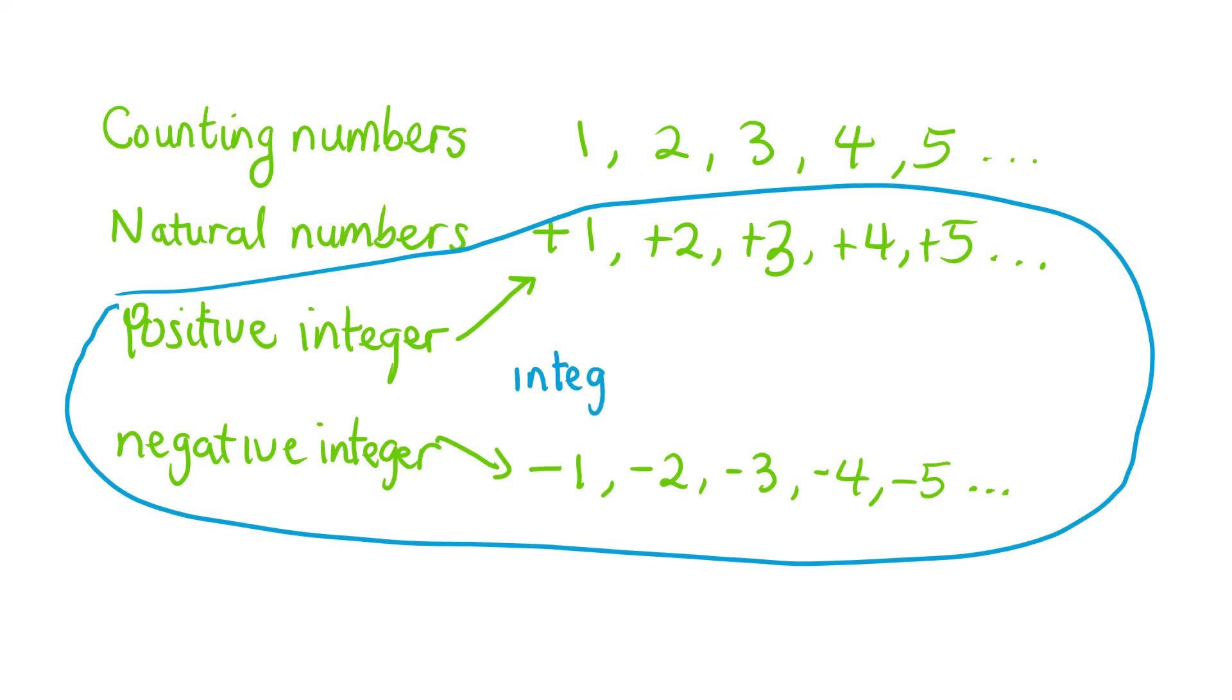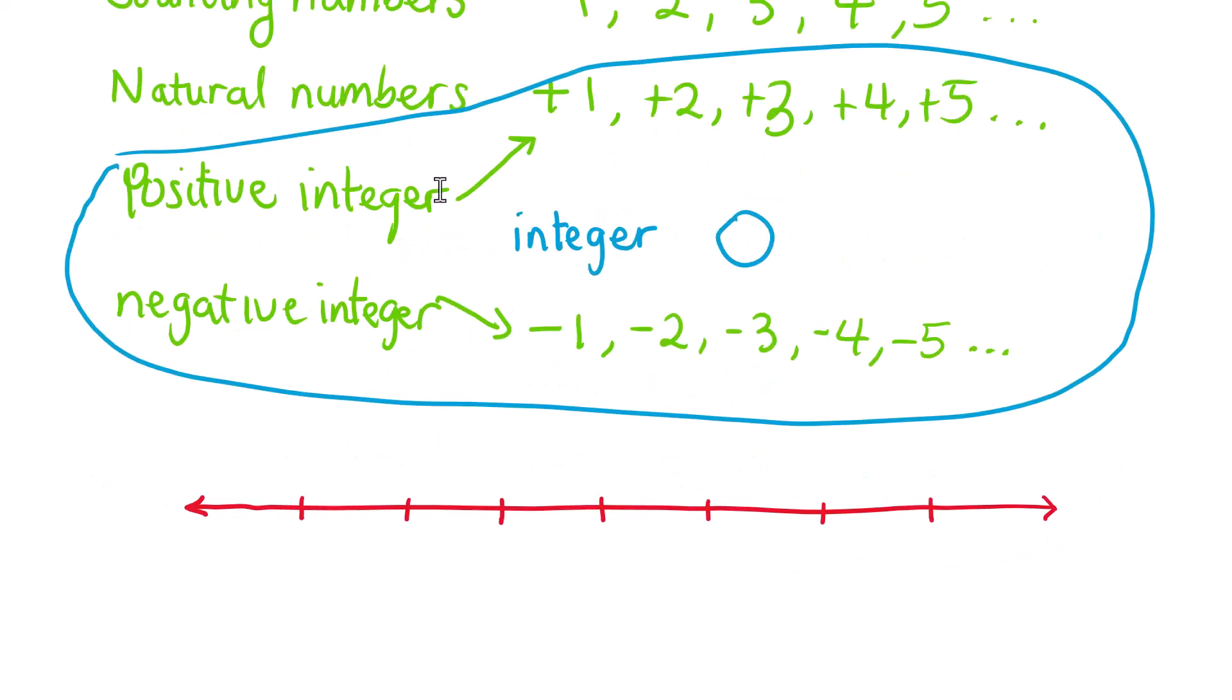This includes zero. Zero can be positive or negative, but we don't really consider the positive or negative of zero. Therefore, when you place the positive and negative integers on the number line, we start at zero in the middle.